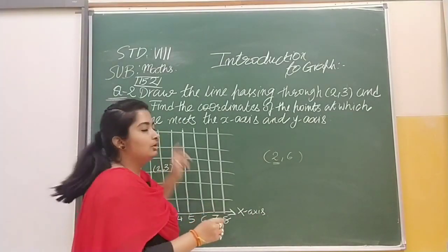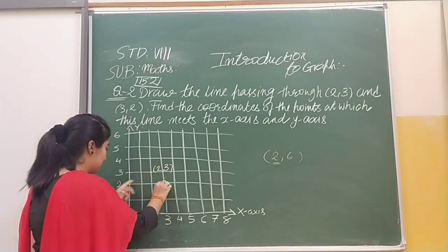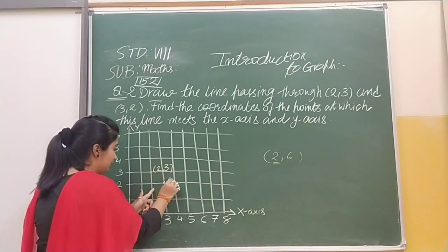And also we have to draw (3,2). So here we have 3 on x-axis and 2 is on y-axis. So here we have (3,2).